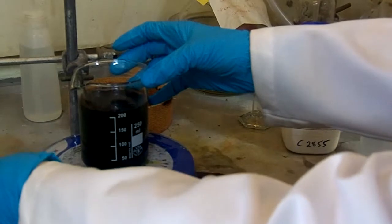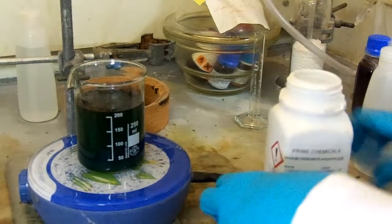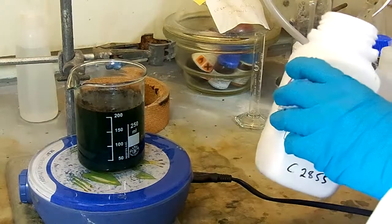Add a stirrer bar to the beaker of your product and put it onto the stirrer hot plate to begin stirring. Begin adding sodium carbonate. Do this slowly as the reaction can be vigorous.